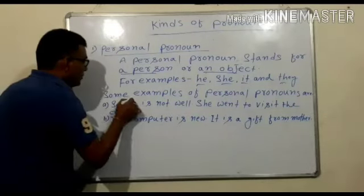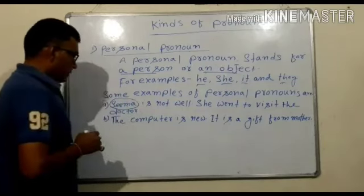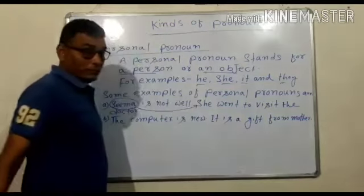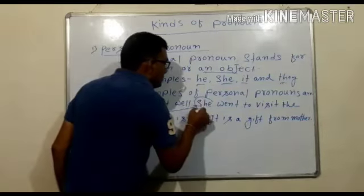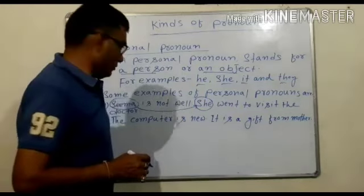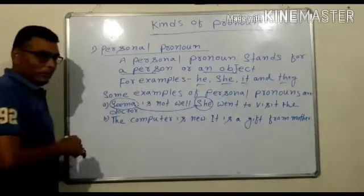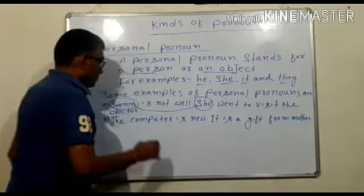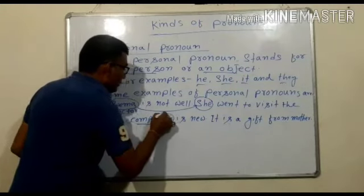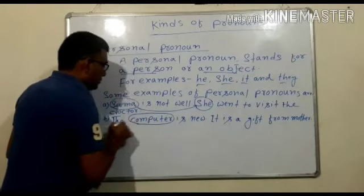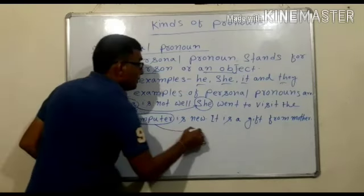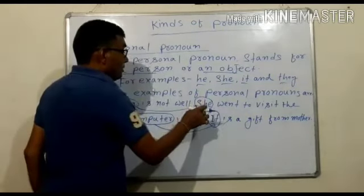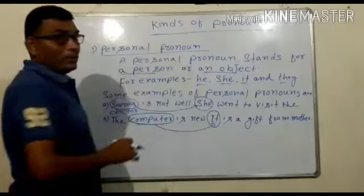Here, Sima is the name of a girl. So in place of Sima, 'she' is used. She is the example of personal pronoun. Next example: The computer is new. It is a gift from mother. Here, computer is the name of an object, so in place of computer, 'it' is used. It is also the example of personal pronoun.